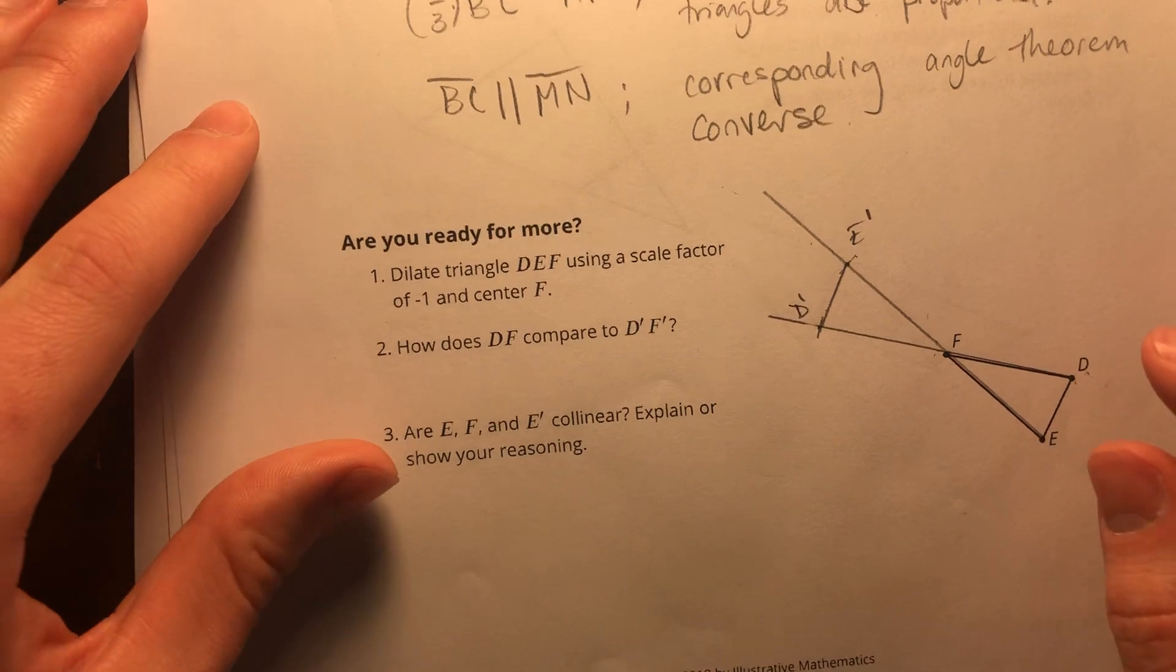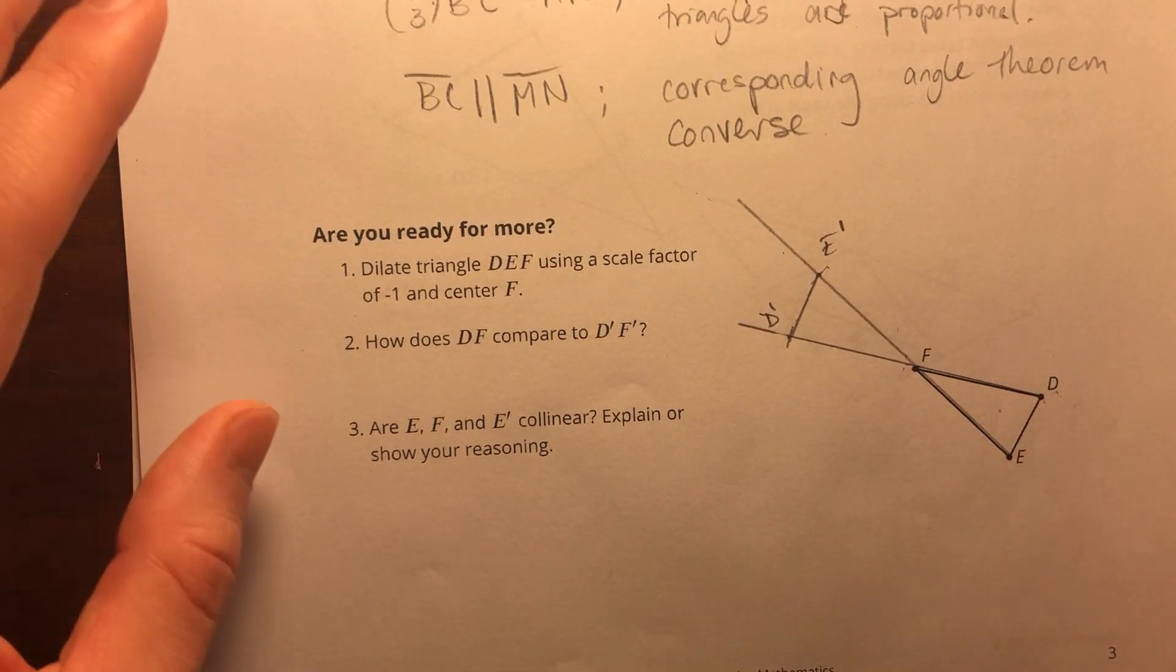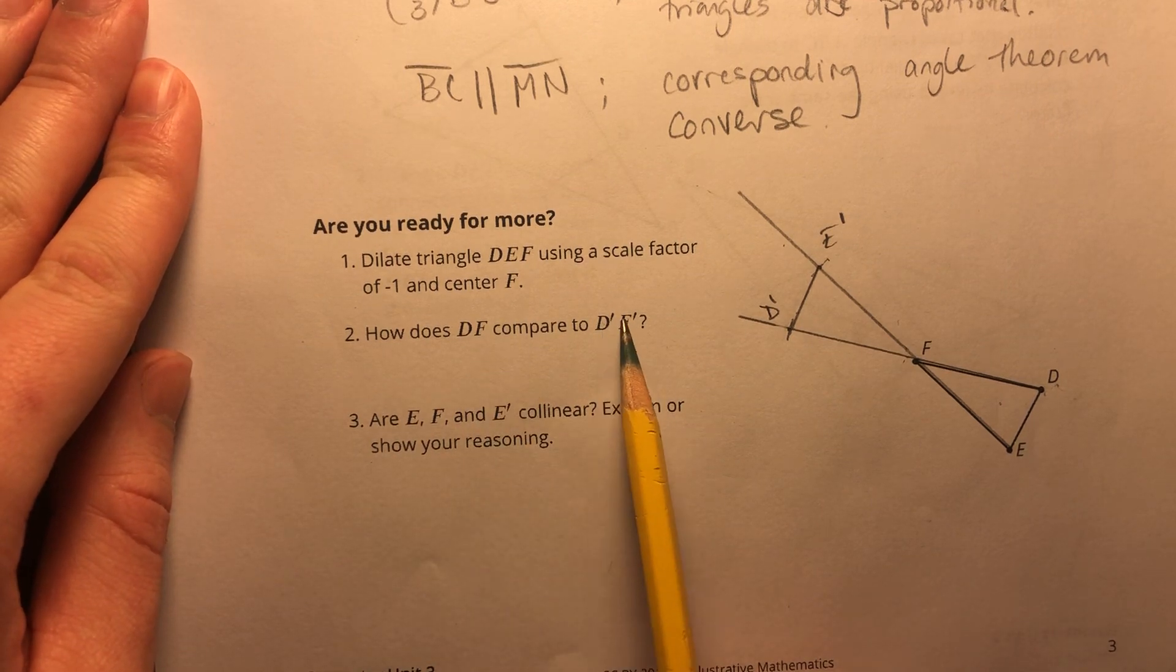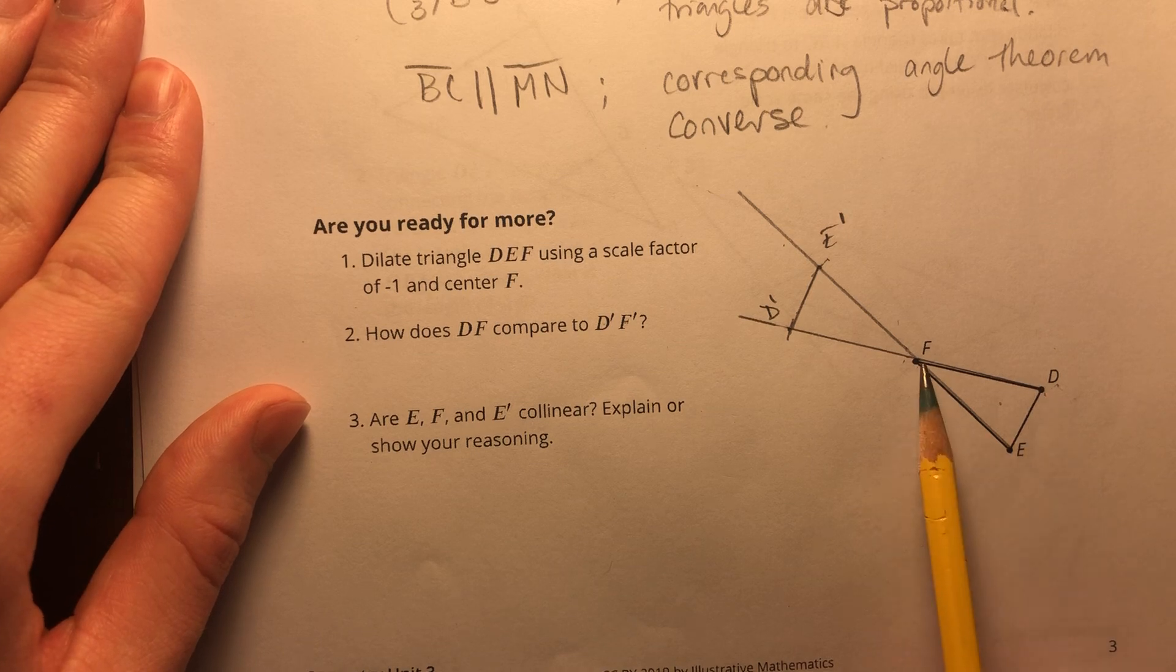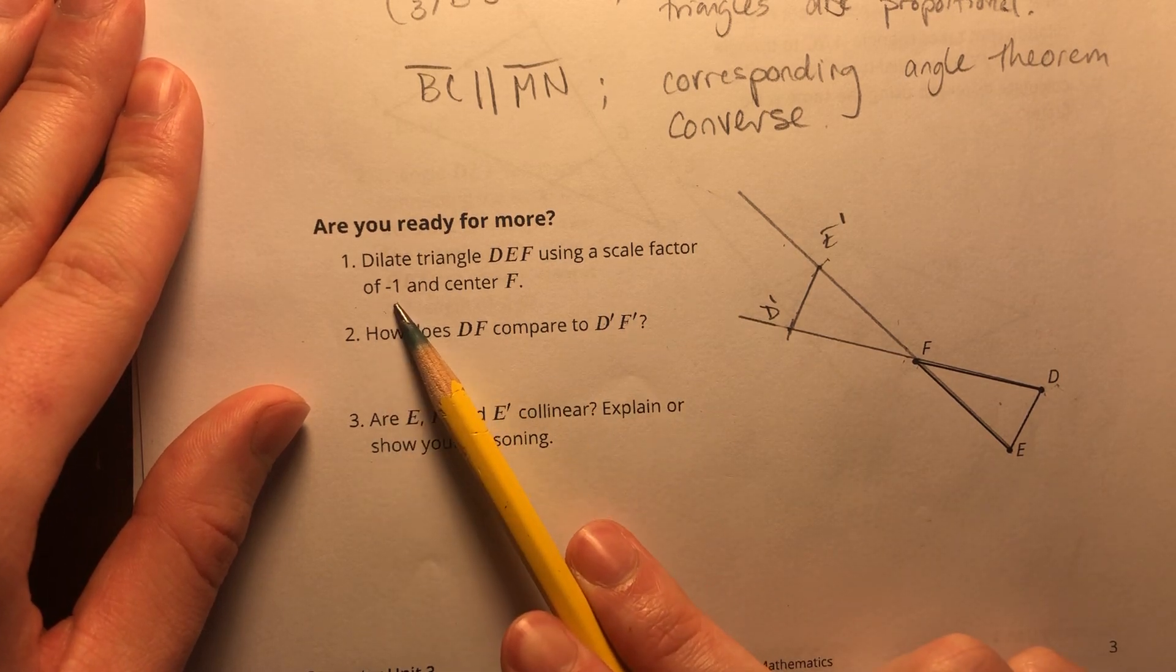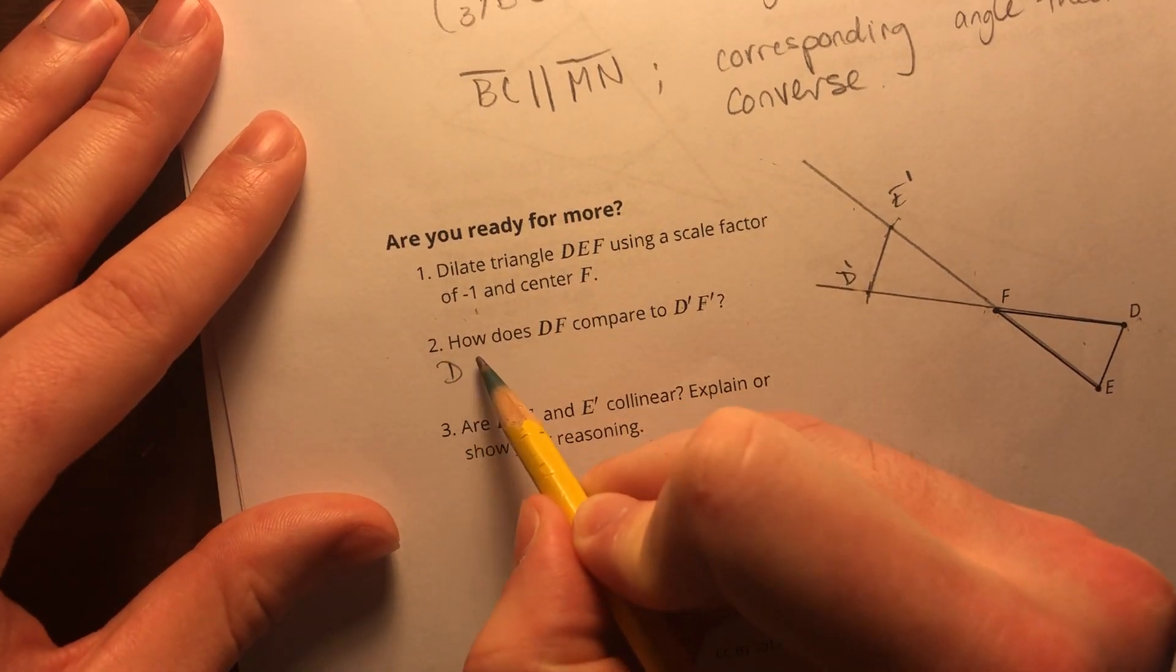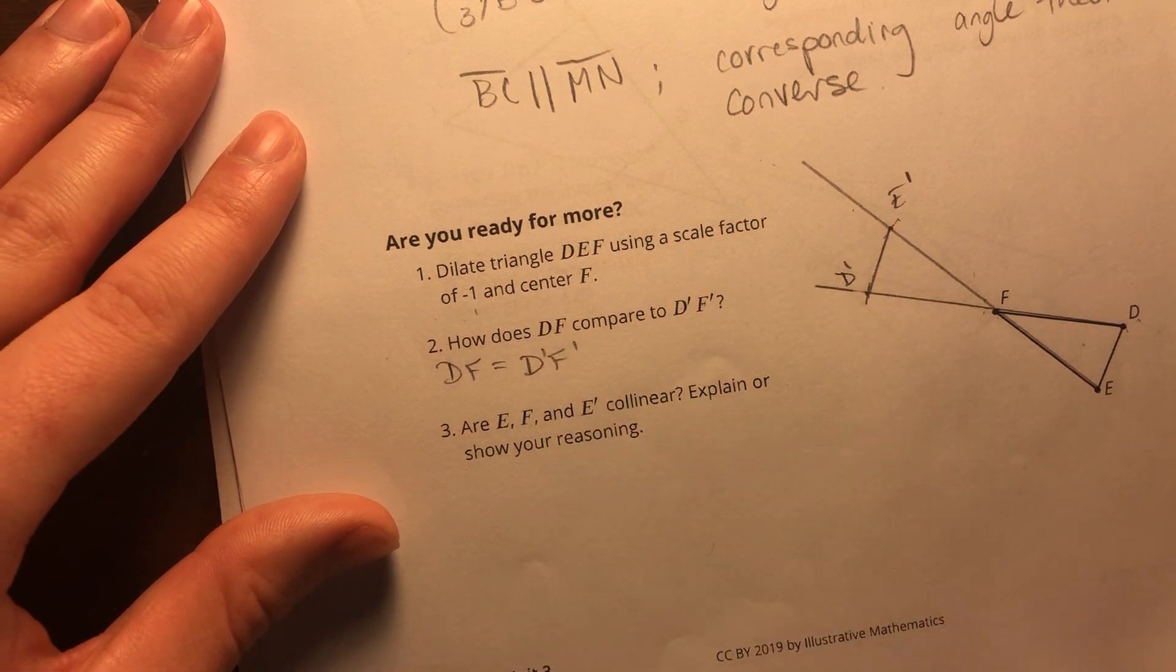So because we've been dilated, I already know that these two triangles are going to be similar. So how does DF compare to D prime, F prime? Well, I know they're congruent, because since the scale factor is negative one, I haven't changed the length of my size. So I know that DF is going to be equal to D prime, F prime.